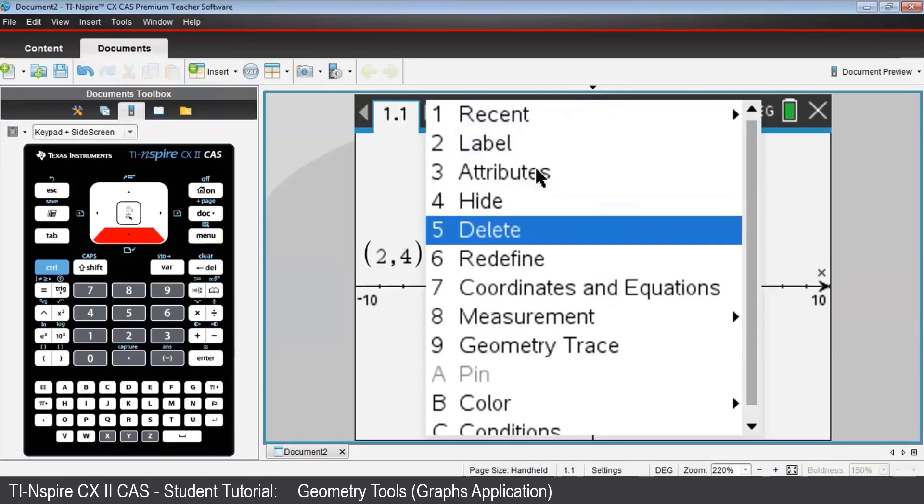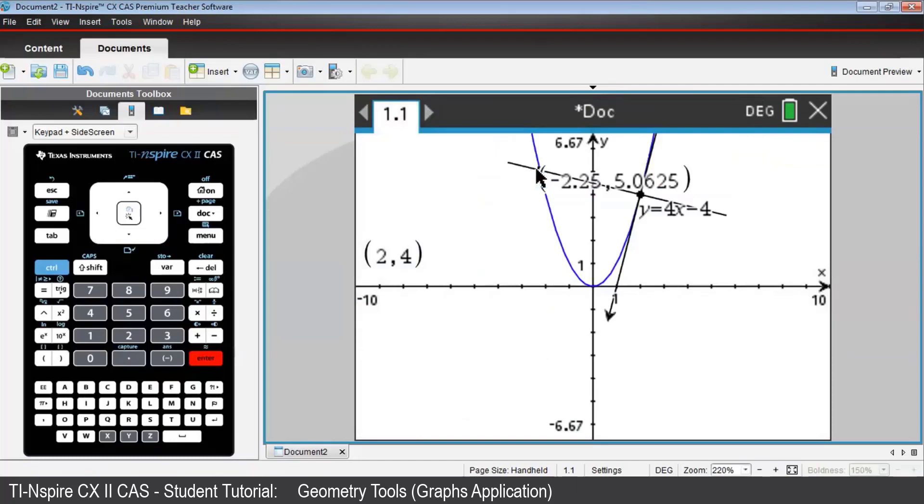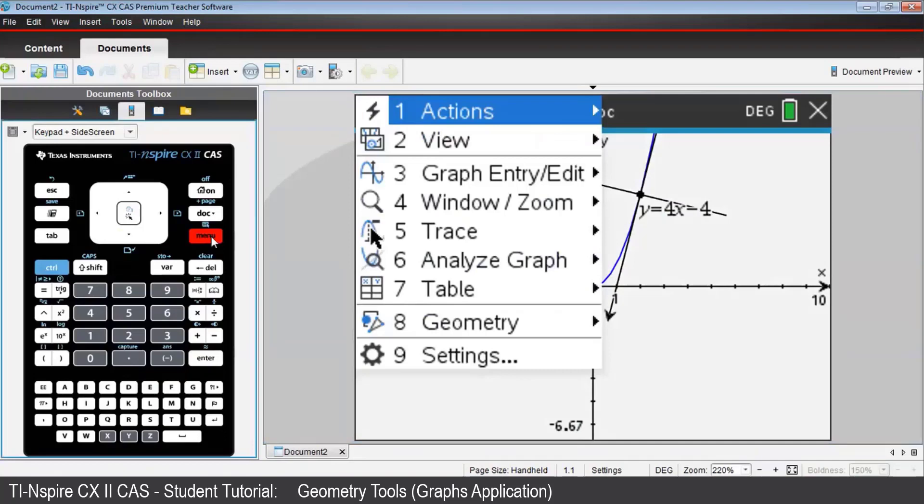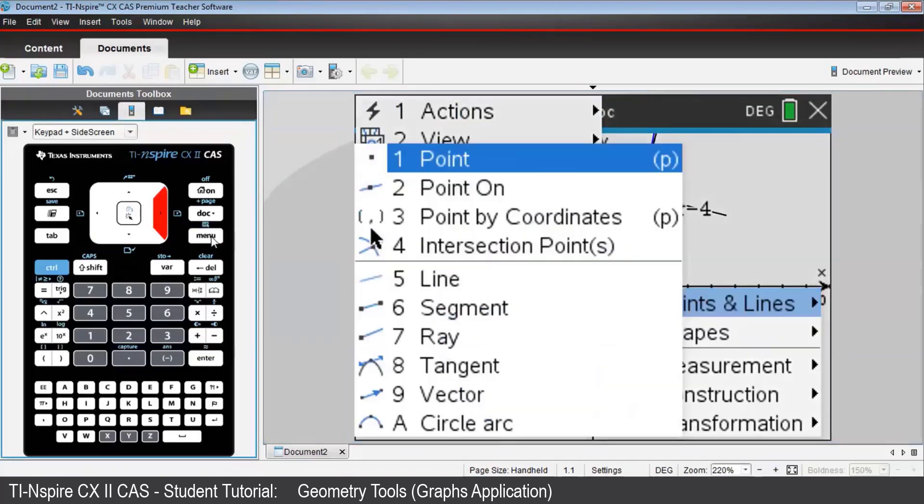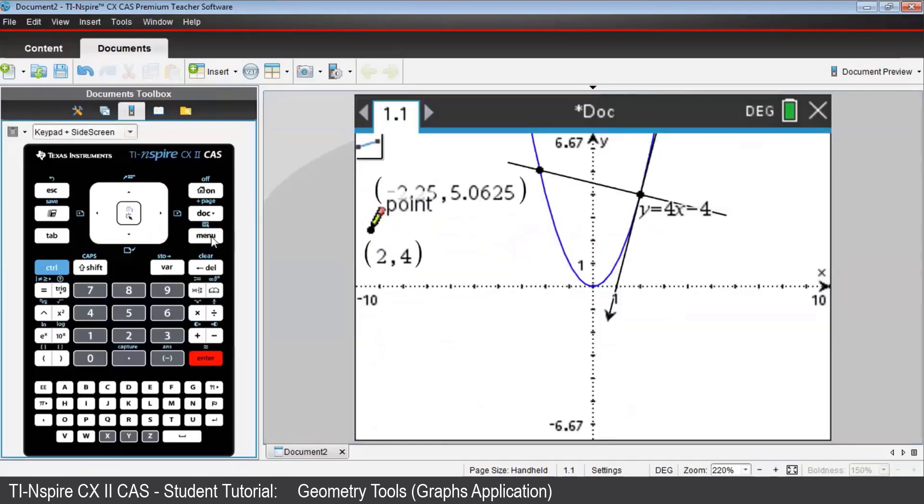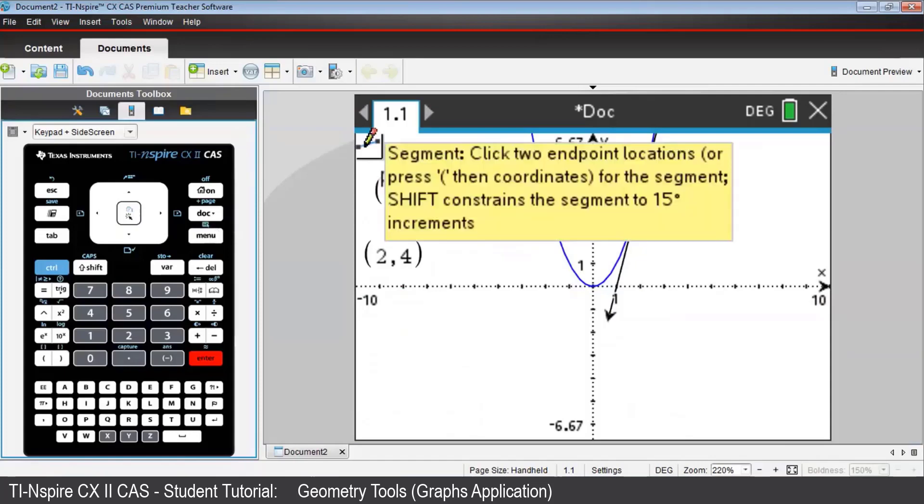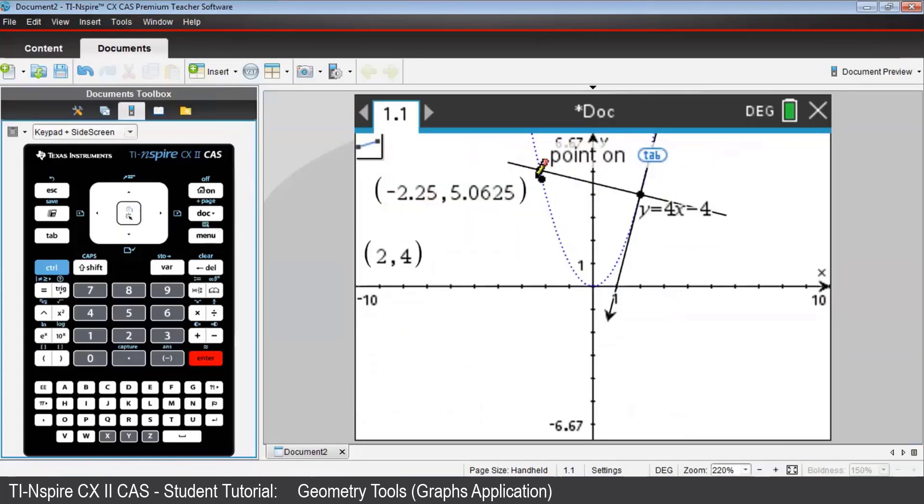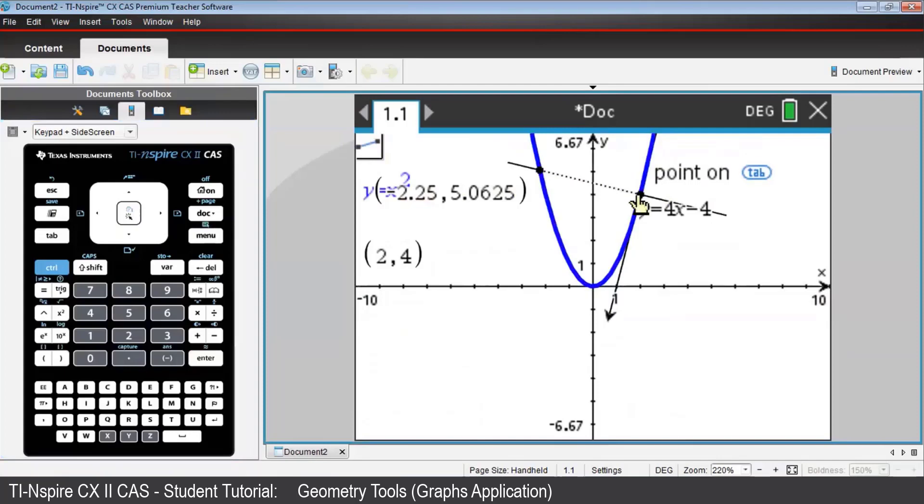Finally, we'll find the distance between the two points 2-4 and –2.25 and 5.0625, but first we need to create a line segment between the points. Press Menu, then Geometry, then Points and Lines, then Segment. Use the icon's instructions to click on each point, any order will do, and the line segment will be momentarily highlighted. Press Escape to leave the segment sub-menu.